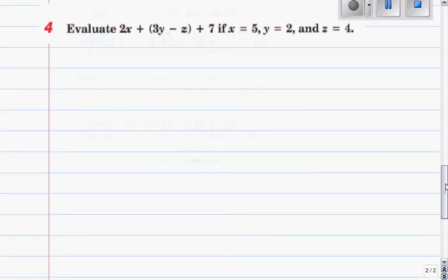Example 4, you are given this. Evaluate 2x plus quantity, 3y minus z, close quantity, plus 7. Parentheses is also read as quantity, or open parentheses and close parentheses, it doesn't really matter.